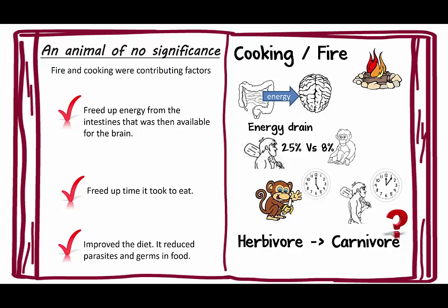By managing fire, it really assisted sapiens in helping grow the brain, energize the brain, and free up time in the day for other things. Harari does not talk about the difference between being a herbivore versus being a carnivore or an omnivore — I think part of that might be because he is actually a vegetarian, so he kind of left that part out. That's something we might want to talk about in class.